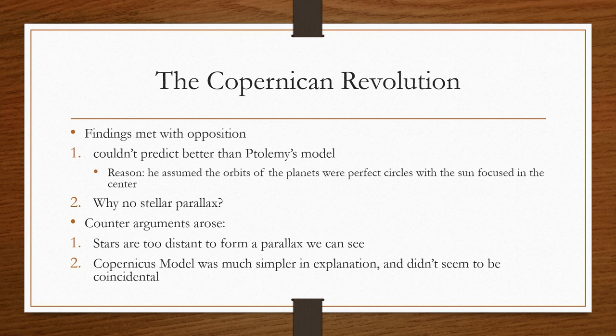Copernicus published his findings in 1543, which circulated privately before then for about 30 years. It was met with a lot of opposition, because it couldn't predict better than Ptolemy's model. Reason? Because he assumed all of the planets had perfect circular orbits. In the next century, it would be found different. It would be found that they actually were ellipses, which would make everything make sense.